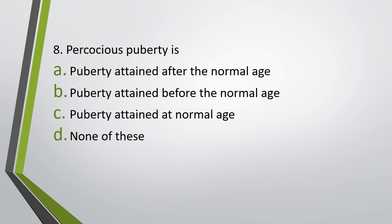Question number eight. Precocious puberty is: puberty attained after the normal age, puberty attained before the normal age, puberty attained at the normal age, or none of these. Correct answer is option B — it refers to puberty which is attained before the normal age.